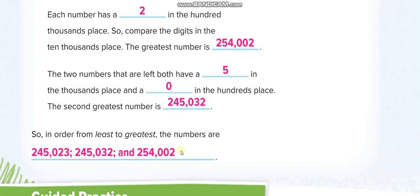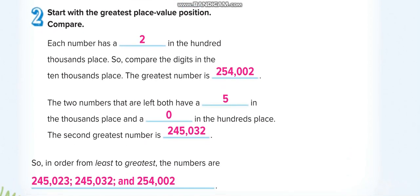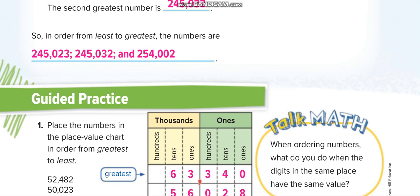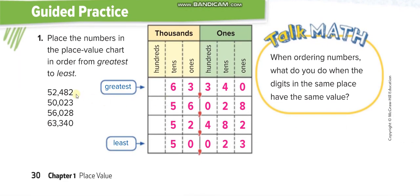Let's move to the next question: guided practice. They give us four numbers and write them in the place value chart — ones under ones, tens under tens, hundreds under hundreds — and then order them exactly like the last example. I prefer that you guys solve this question by yourself for practice, then match your answers from this video.